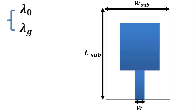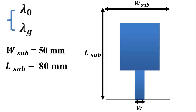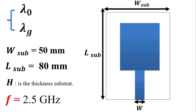In our example we work on a sample patch antenna. This antenna has a width of substrate equal to 50 millimeters and a length of substrate equal to 80 millimeters. H is the thickness of the substrate, and we have a resonance frequency equal to 2.5 GHz.